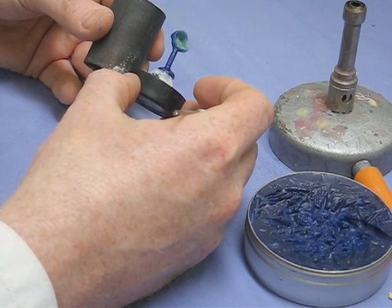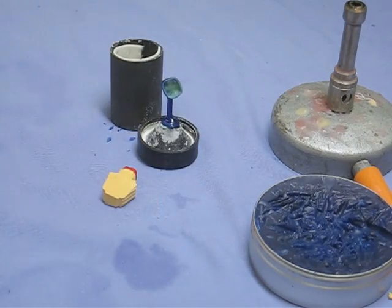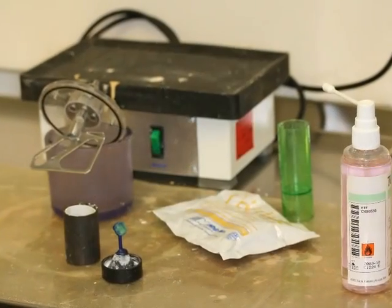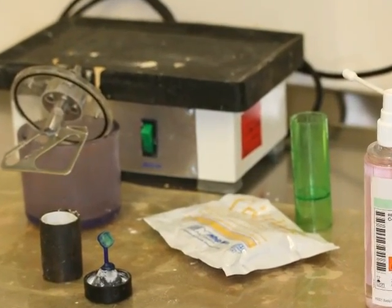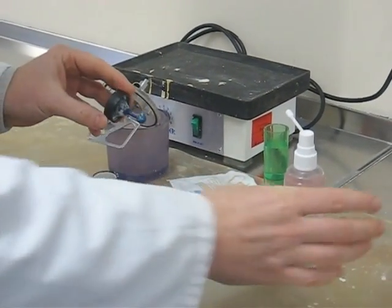So notice the sprues being mounted sort of straight up and the pattern is at an angle so that as the metal shoots through it will just fill it all in the direction of the casting.